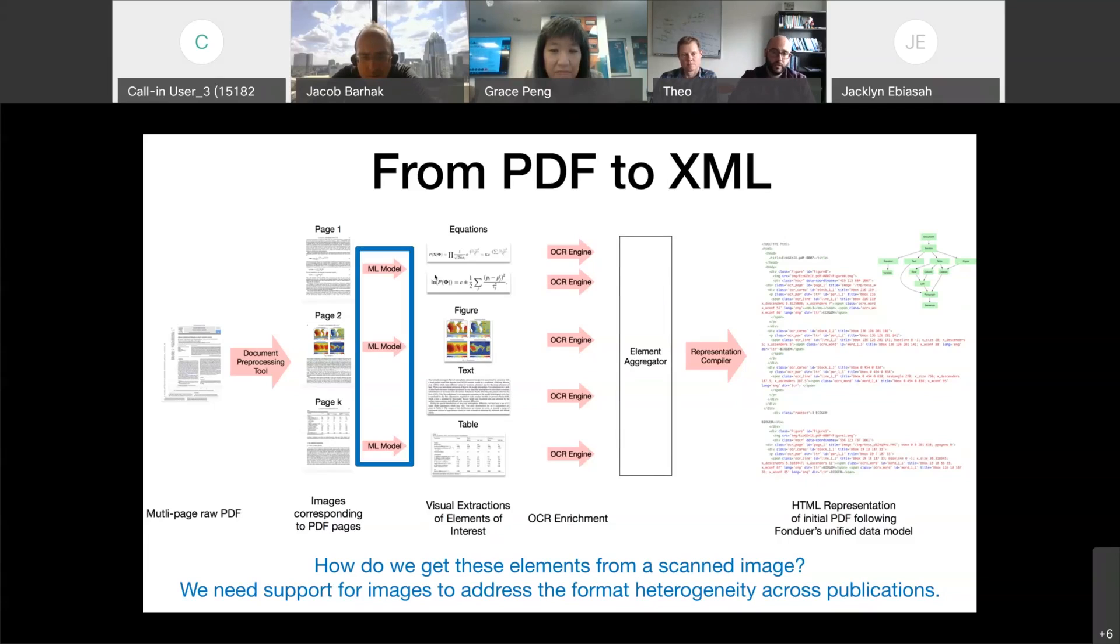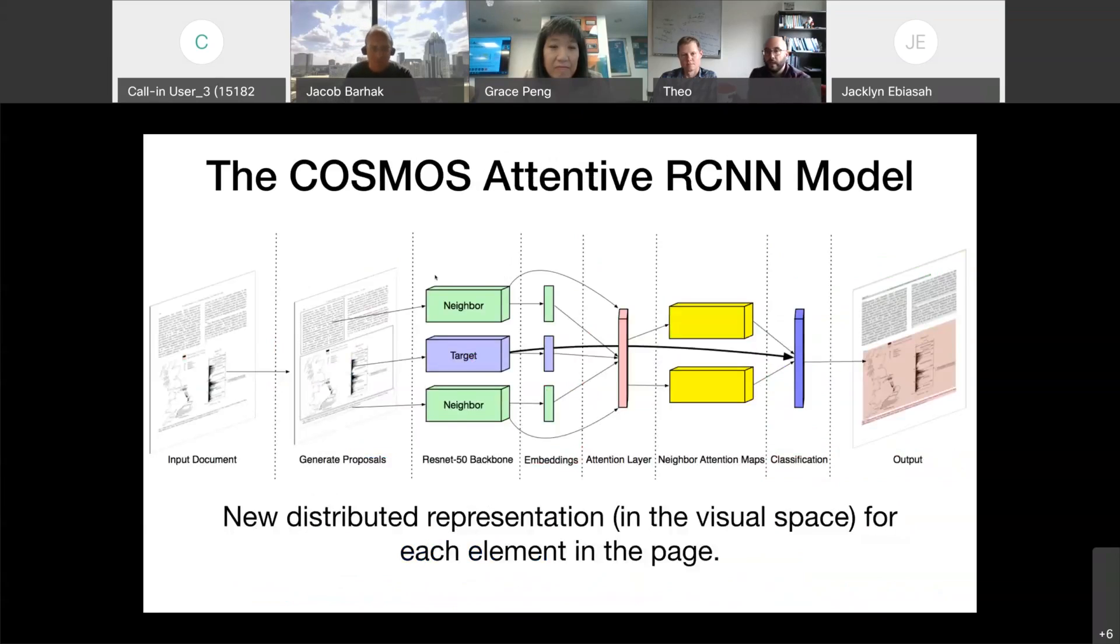So let me focus a little bit on the first part, which is how do we recognize these elements in the different images. Cosmos applies a new deep learning model. We refer to it as the attentive RCNN model, where this model basically for each element, its segment in the page, tries to understand the contextual semantics that characterize this element. As you would expect, it is easy for a human to understand that a figure caption should be close to a figure.